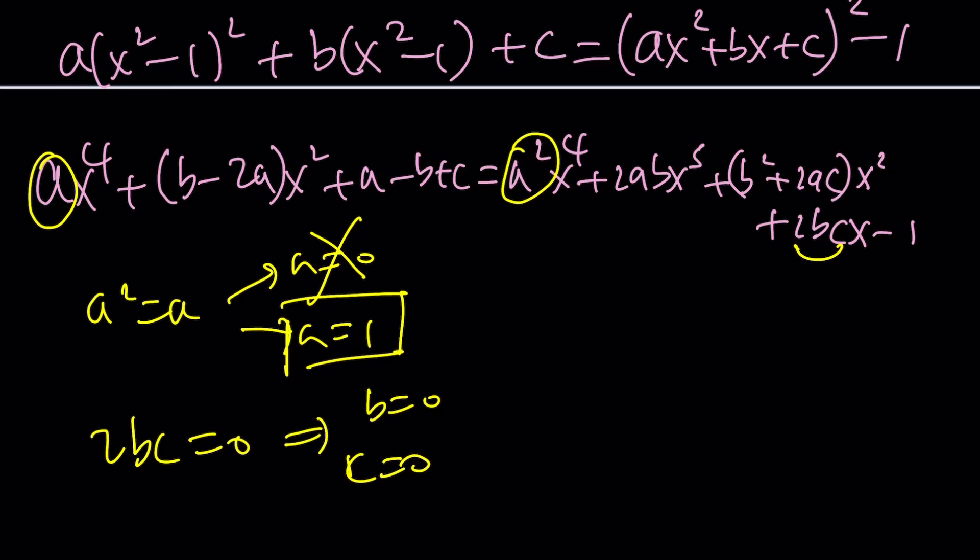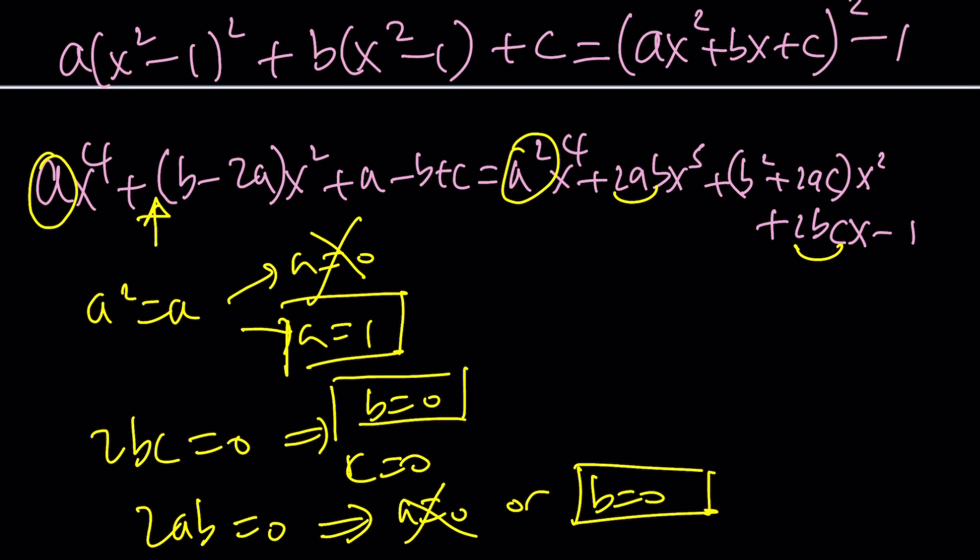And then I need to check what else I can check. I can check the coefficient of x cubed. I'm not doing it in a very organized manner, but sorry about that. There's no x cubed here, and you don't have to be very organized all the time. It's kind of boring, isn't it? From here, we get a equals 0 or b equals 0, but again, a equals 0 is not allowed, so b equals 0 is a possibility, which means c equals 0 is also a possibility. But you got to be careful because we have to check everything. That's the fun part.